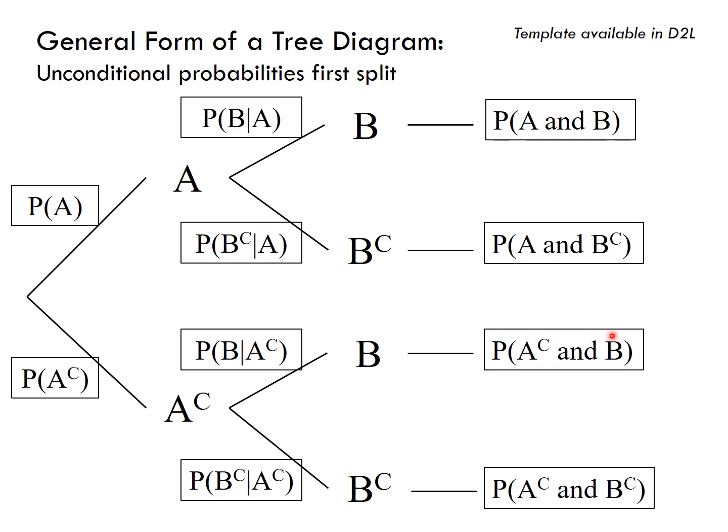In other words, the probability of B is the probability of A and B plus the probability of A complement and B.